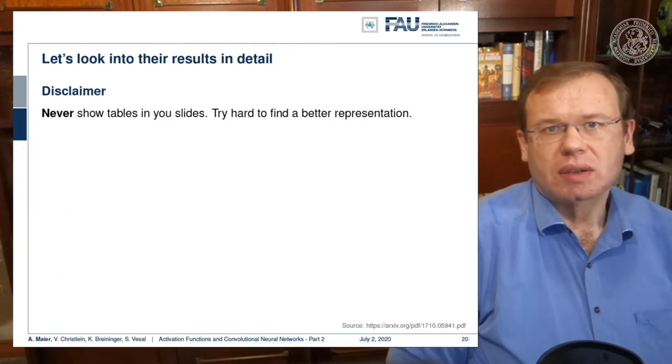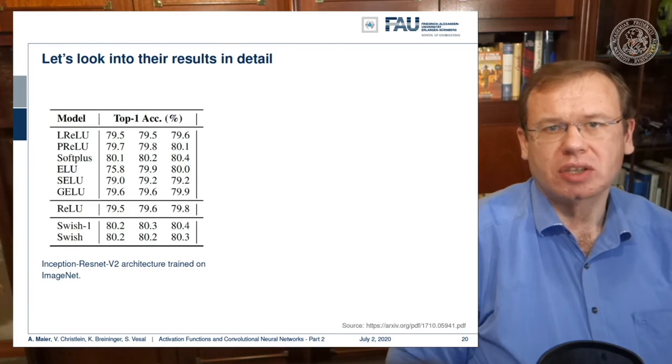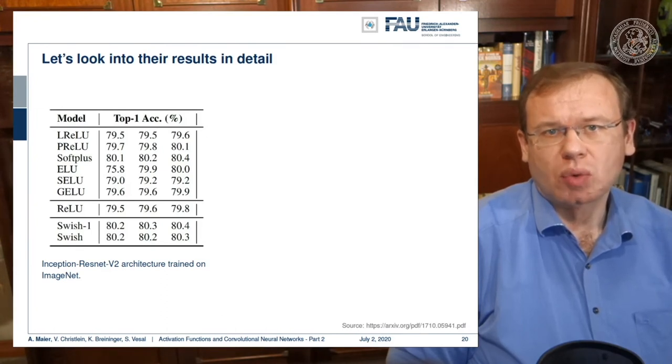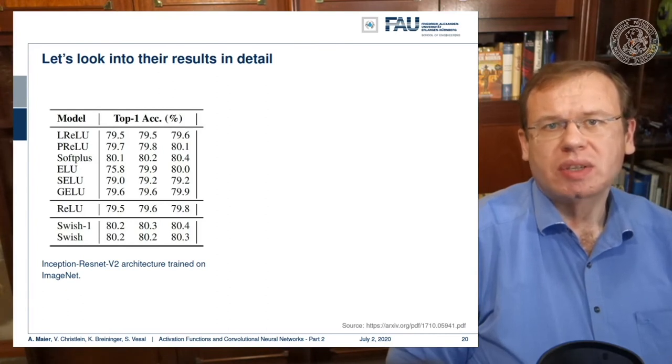So let's look at the results in detail. Now a disclaimer, never show tables in your results. Try to find a better representation. However, we did not find a better representation. What I can show you here is that these are the top one accuracies that they have obtained. This was done in an Inception ResNet V2 architecture trained on ImageNet. In the third row from the bottom, you could see the results with the ReLU. And then the bottom two rows show the results with the swish one and swish.